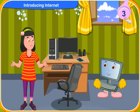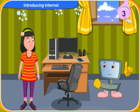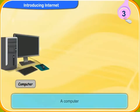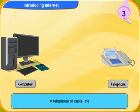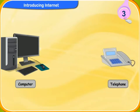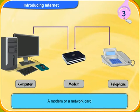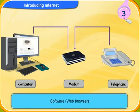What do we need for an internet connection? The following things are needed for an internet connection: a computer, a telephone or cable line, a modem or a network card, software or web browser, and a company providing internet connection.